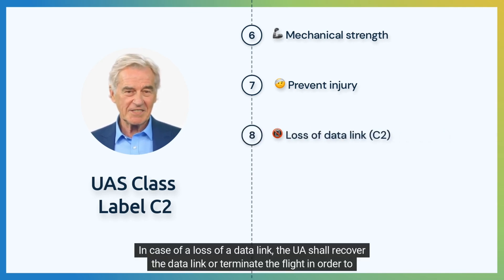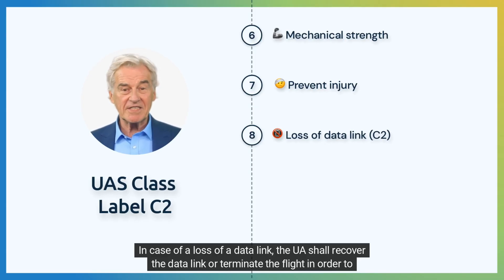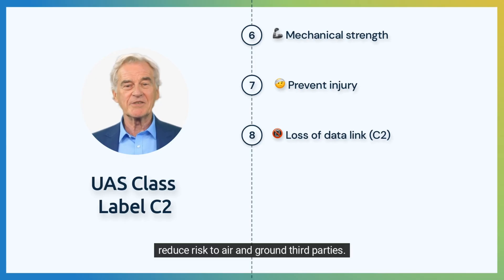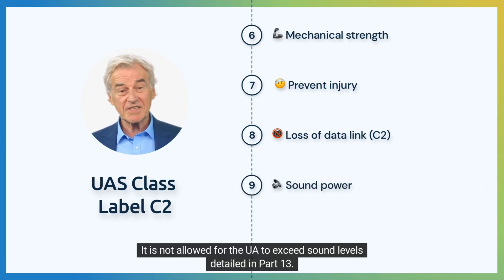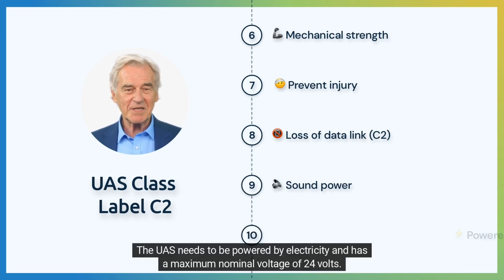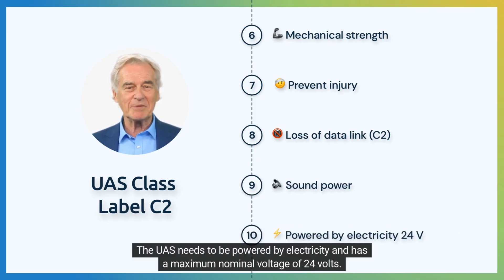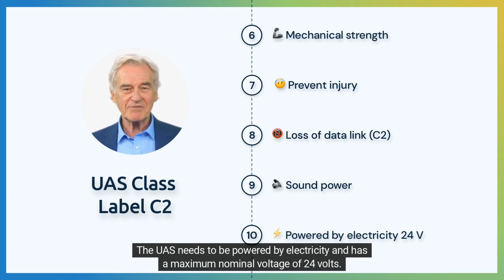In case of a loss of a data link, the UA shall recover the data link or terminate the flight in order to reduce risk to air and ground third parties. It is not allowed for the UA to exceed sound levels detailed in Part 13. The UAS needs to be powered by electricity and has a maximum nominal voltage of 24 volts.